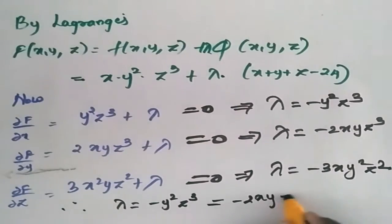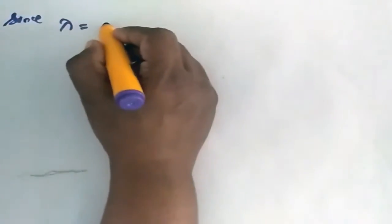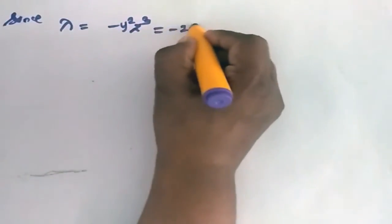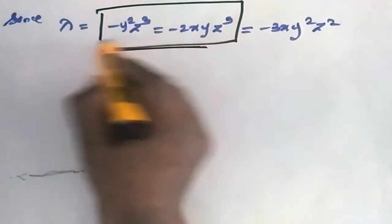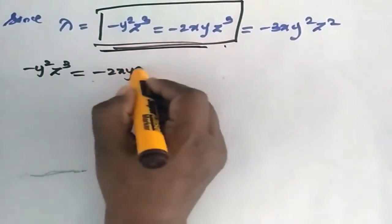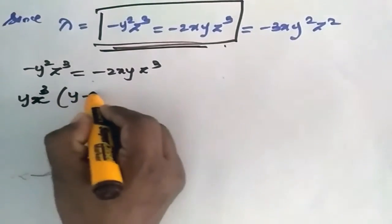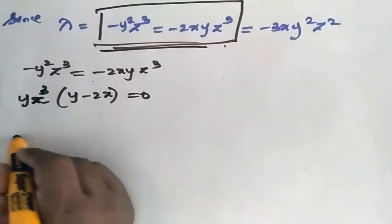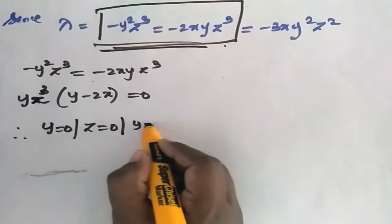Setting the partial derivatives equal, we get: minus 2XYZ³ is equal to minus 3XY²Z². Since lambda is equal to minus Y²Z³ is equal to minus 2XYZ³ is equal to minus 3XY²Z². From the first two: Y·Z³·(Y minus 2X) is equal to 0. Therefore Y is equal to 0, Z is equal to 0, or Y is equal to 2X.